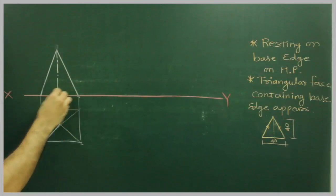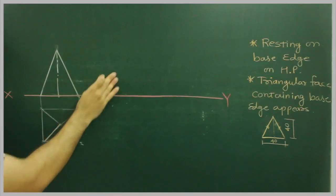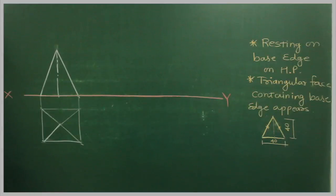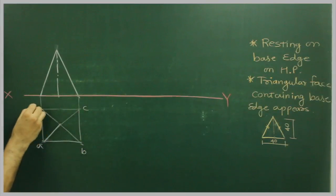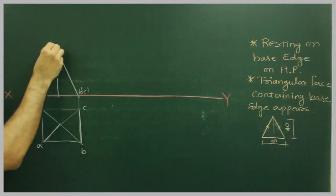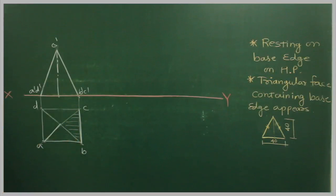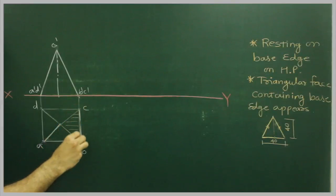Now after this, if you see, they have not given any information about stage 2. They want that one of the triangular surface which is containing the base edge appears as an isosceles triangle. So if you see base edge, which is P dash C dash, this is the base edge and this is the triangular surface which appears as an isosceles triangle, and we already have base 40.